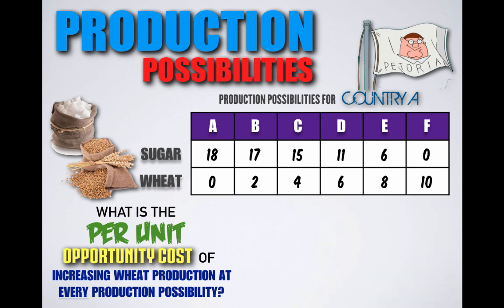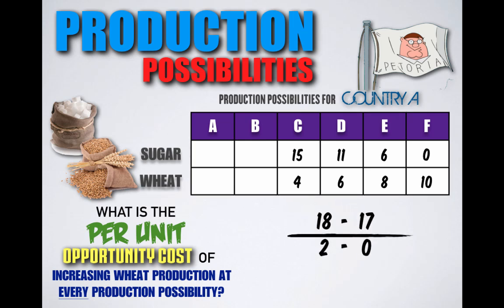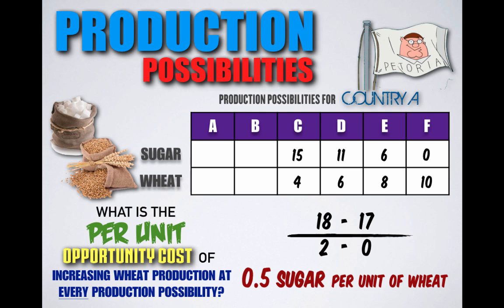If Petoria shifted production from combination A to combination B, they decreased sugar production from 18 units to 17 units but increased wheat production from no units to two units. Petoria lost one unit of sugar but gained two units of wheat. So for every unit of wheat gained, Petoria lost the potential to produce half a unit of sugar.